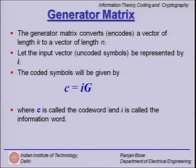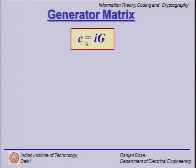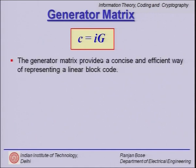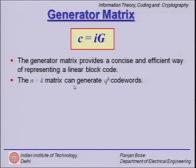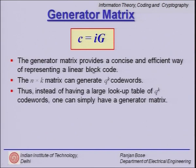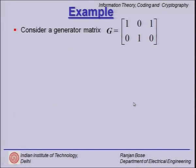Care must be taken that the generator matrix generates a valid linear block code: the all-zero codeword must be valid, and any two codewords added together must yield another valid codeword. The generator matrix provides a concise and efficient way to represent a linear block code — in fact it is the only practical way for large k. A k × n matrix can generate q^k codewords.